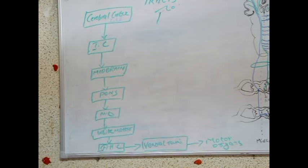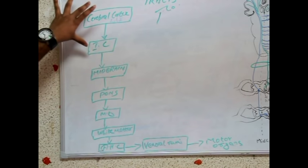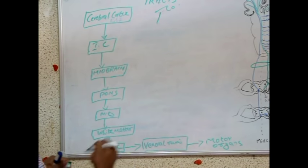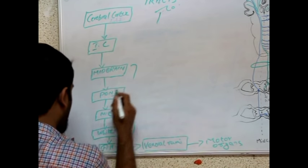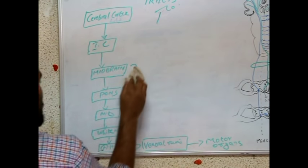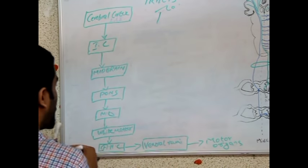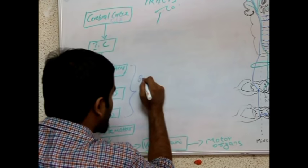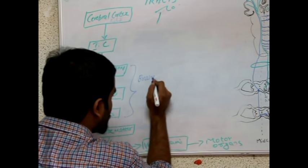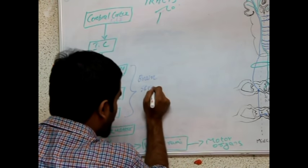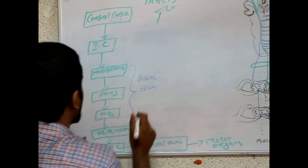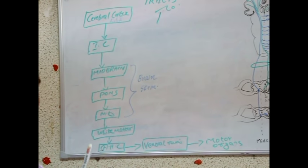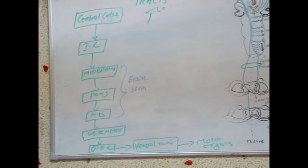Normally the pyramidal system follows this pathway: from cortex, through corona radiata, internal capsule, midbrain, pons, medulla oblongata. Together, midbrain, pons, and medulla oblongata are known as the brainstem. This is the pathway of the corticospinal tract. There is another pathway known as the corticobulbar tract — from the cortex to the nuclei situated in the brainstem.